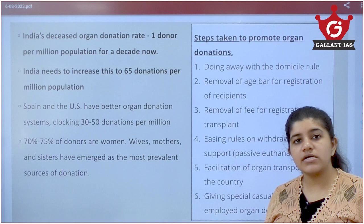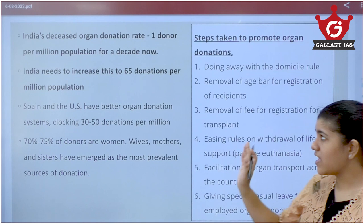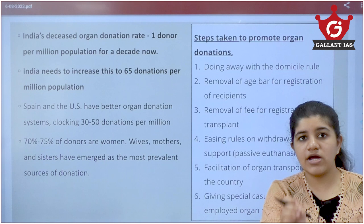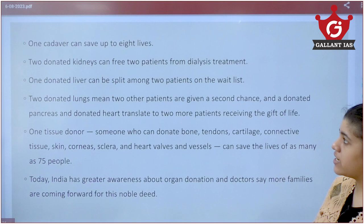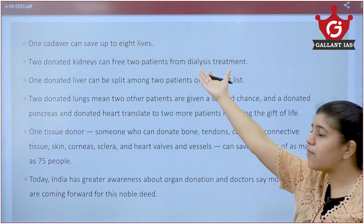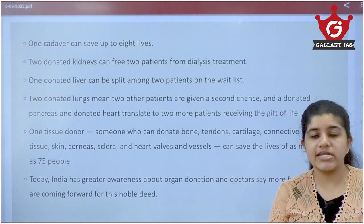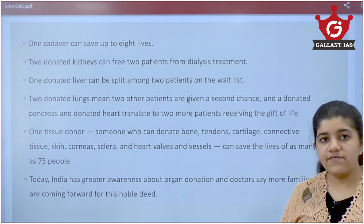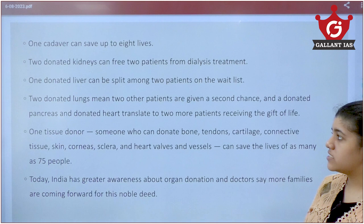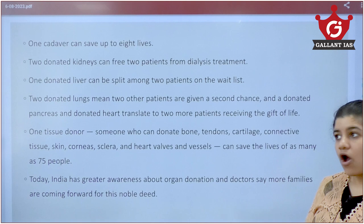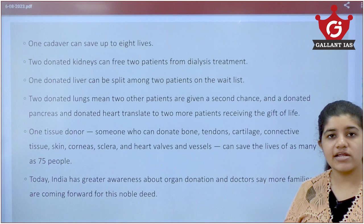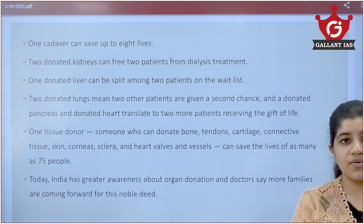India needs to increase awareness about organ donation. A healthy person should sign up for organ donation. One decision to donate organs can save six to seven lives. From one cadaver, organs can help save about eight lives. Two donated kidneys help two persons avoid dialysis. One donated liver can be split between two patients. Donating one tissue — bone marrow, tendons, cartilage, or connective tissue — can save up to 75 lives.